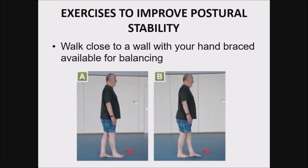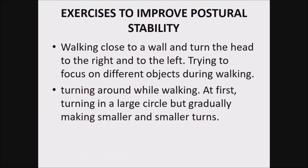Next is walking — initially walking close to the wall with the hand available for balancing. Then they walk normally, then with arms crossed, then in toe-to-heel position, and then with eyes closed. All exercises progress step by step: good support base first, then reducing the support base, then closing the eyes to slowly gain confidence. The next step is walking close to the wall and turning the head right and left, concentrating on different objects while walking, making the situation progressively more complex.